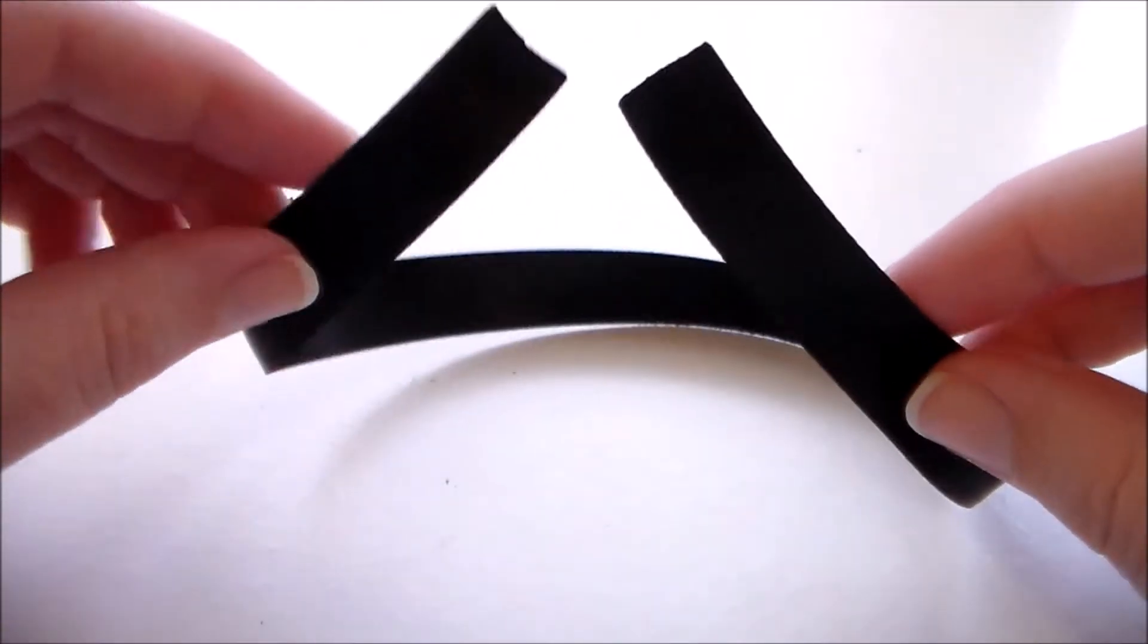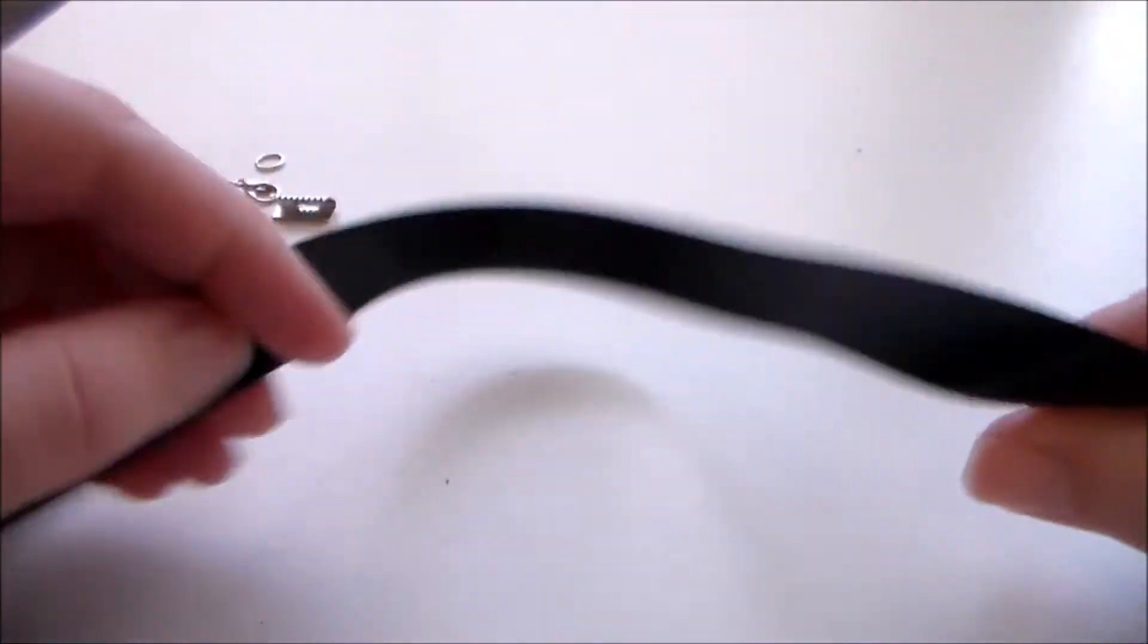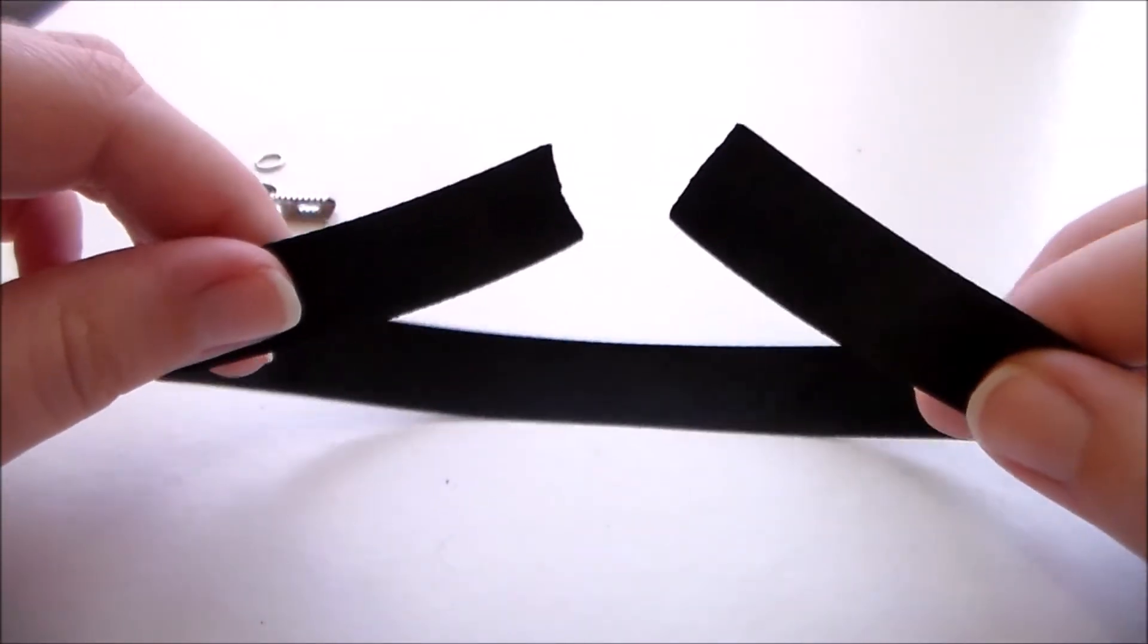To make Cinderella's necklace, I started with a piece of double-faced black satin ribbon that is slightly smaller than the width of my neck.